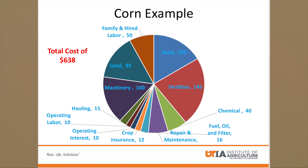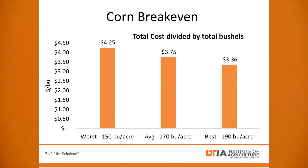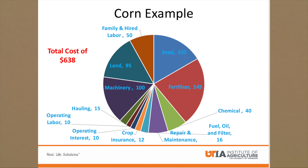If you look at the next slide, we'll show these breakeven prices. You take your total cost and divide it by your total output. I made a worst case, average case, and best case scenario of different yields. In the average case, if you divided $638 an acre by 170 bushels an acre — which is your sort of average expected yield — you'd have a breakeven price of $3.75 a bushel. Now you know that you need to sell your corn for $3.75 a bushel just to break even, so you need to sell above that to make a profit.